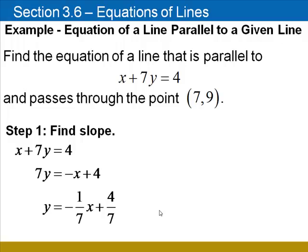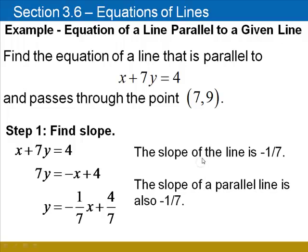Subtract x from both sides, divide both sides by 7, and we find that the slope is negative 1 seventh.